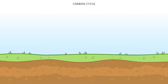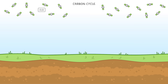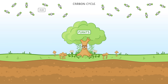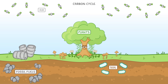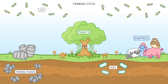Most of the carbon is split between five stores: in the air, where it's carbon dioxide; in plants, where it's locked up in biological molecules; in the soil, which contains lots of bacteria and other microorganisms; in fossil fuels, which are also underground; and of course in animals, where like plants, it's locked up in biological molecules.